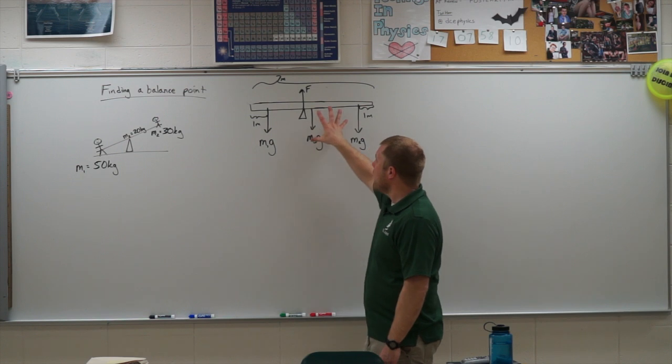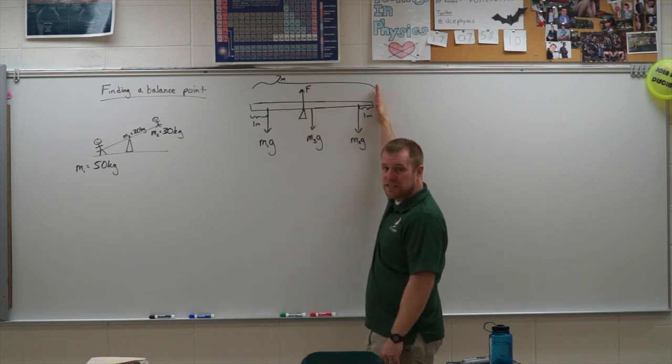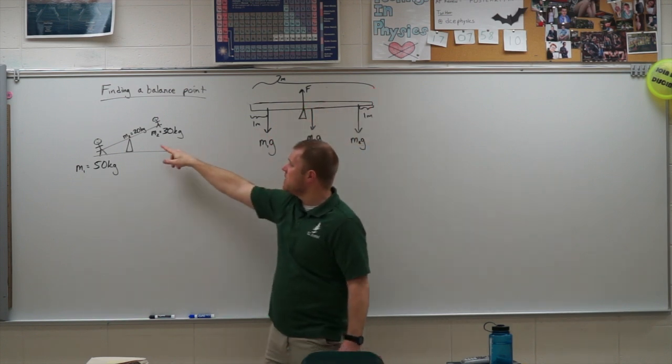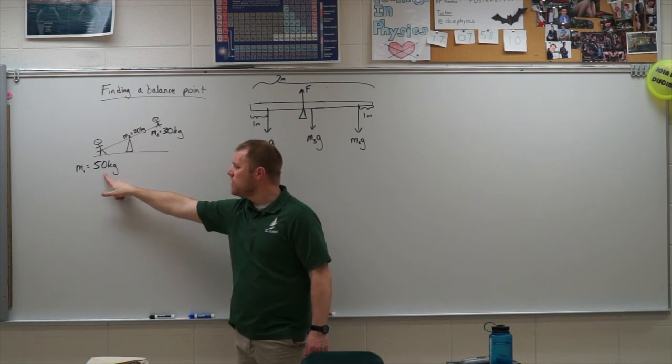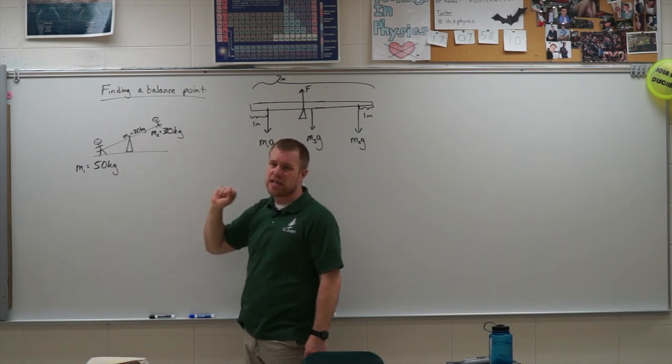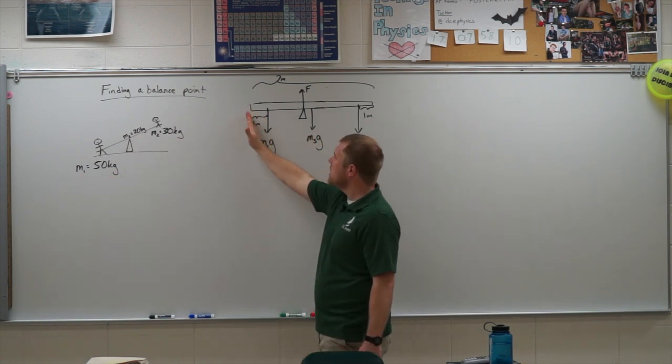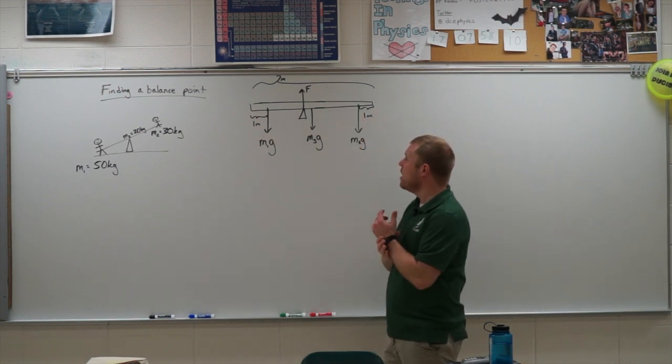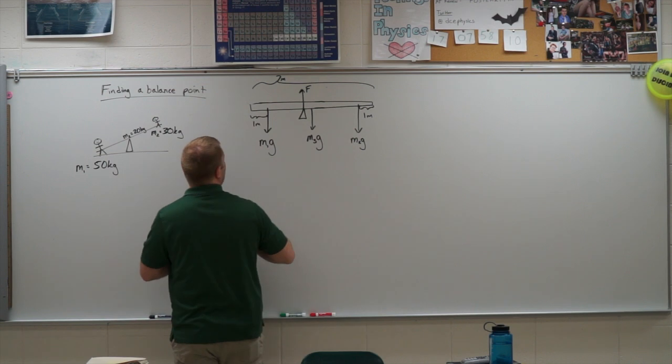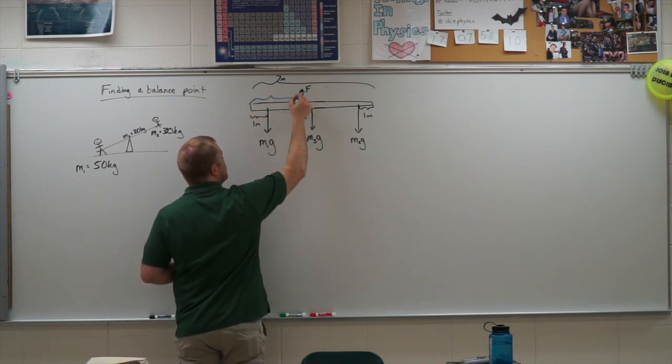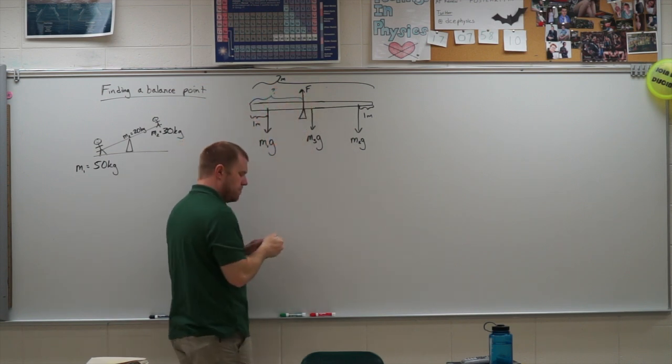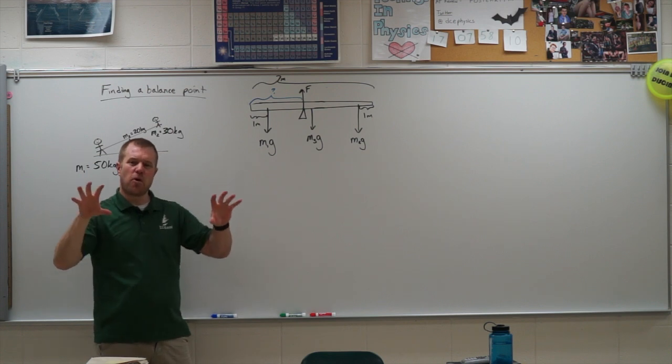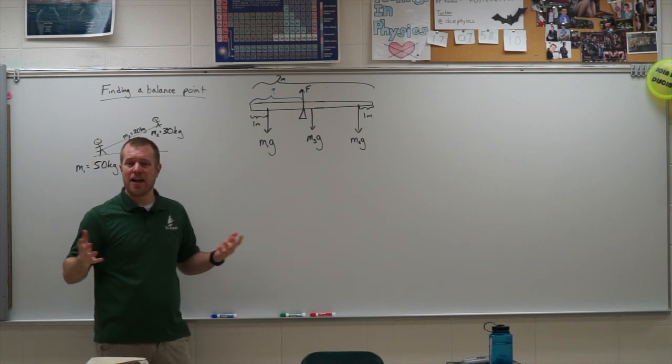So I have a seven meter long teeter-totter. It has a mass of 20 kilograms and I have a 50 kilogram kid and a 30 kilogram kid. And they're each sitting about one meter in from each side and I want to figure out how far from that left edge should I place that fulcrum so that they balance perfectly so that they can teeter-totter nicely.